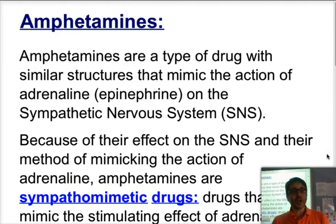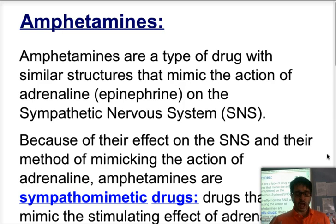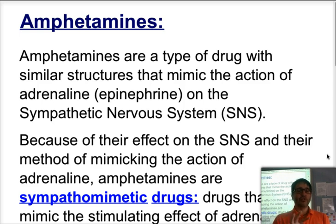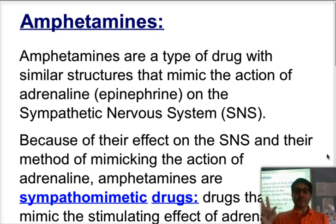The first type of stimulants we're going to talk about is amphetamines. Amphetamines is a general name for drugs that have a chemical structure similar to that of adrenaline or epinephrine, and therefore they can mimic the action of epinephrine on the sympathetic nervous system. Therefore, because they can mimic that action, they are called sympathomimetic.